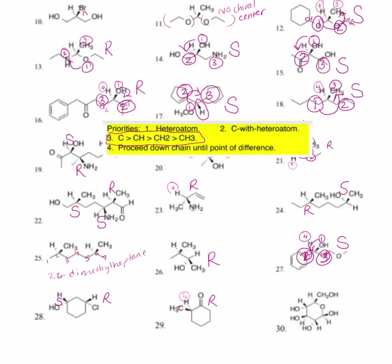Number thirty looks complex, so let's take it stepwise. Starting at the top where H is to the rear: the oxygen on the right gets priority number one, the majority of the molecule here is going to be number two, and this is going to be number three. This rotates clockwise with H to the rear, so the top asymmetric center is an R. Moving to the next center: I have an oxygen with a hydrogen, and an oxygen with a carbon. The oxygen with a carbon is going to be number one, oxygen with a hydrogen is number two, and the rest of the molecule is number three. This rotates clockwise with H to the rear, making this also an R asymmetric center.